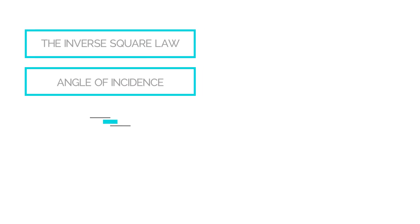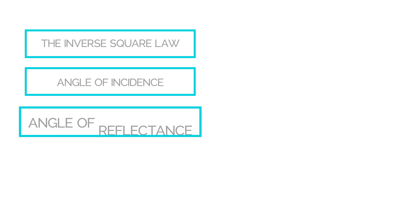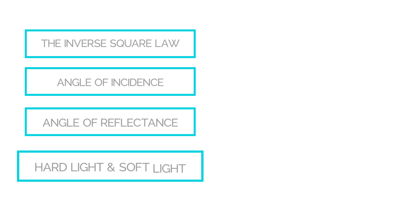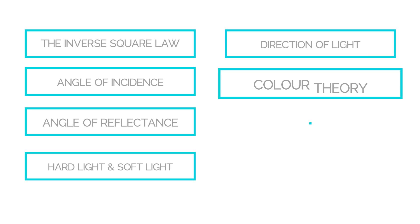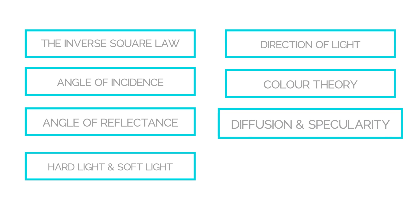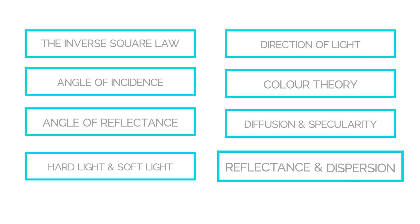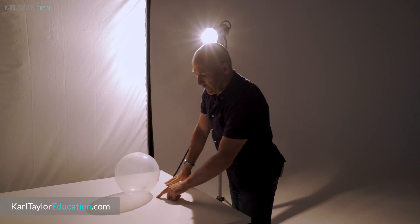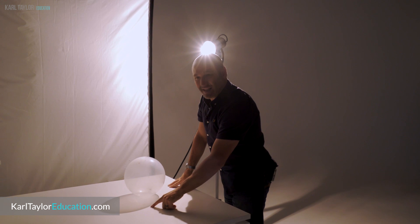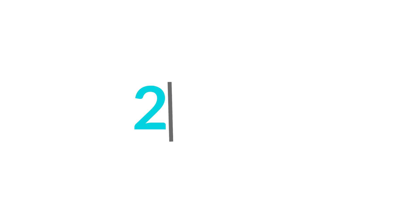Useful concepts include the inverse square law, angle of incidence, angle of reflectance, hard light and soft light, direction of light, color theory, diffusion and specularity, reflectance and dispersion. All of these principles I cover in great detail on KarlTaylorEducation.com. Number two: being afraid to experiment.